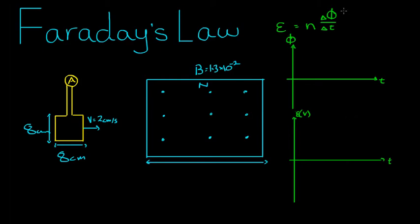So familiarize yourself with this formula. The magnitude of the electromagnetic induction is equal to the number of loops, say if we're dealing with a coil, if it's just a loop then it equals one, multiplied by the change in flux over the change in time. And flux is equal to the strength of the magnetic field multiplied by the area.